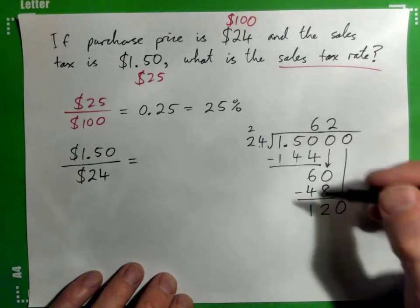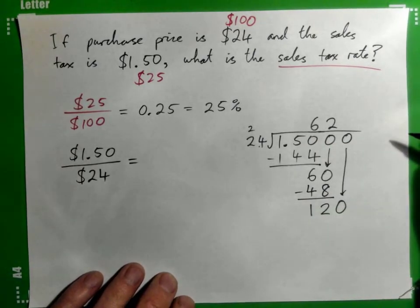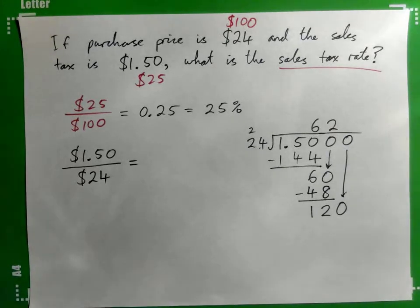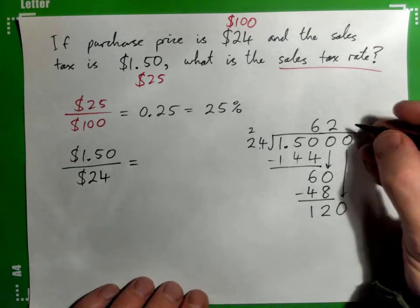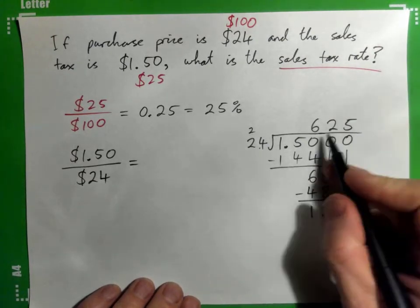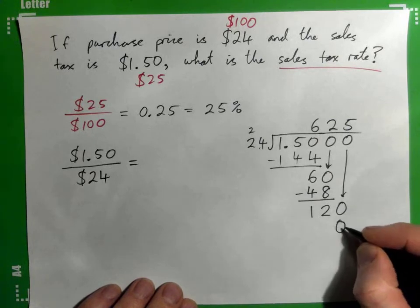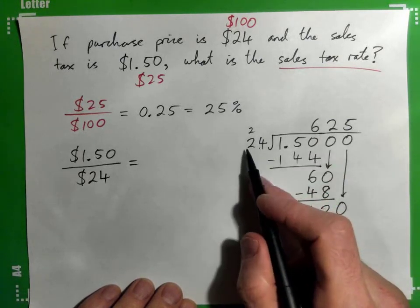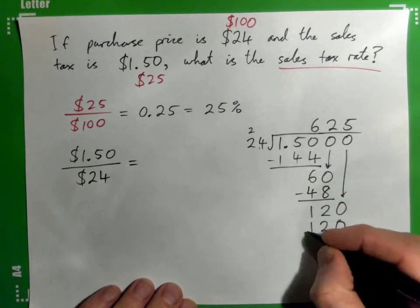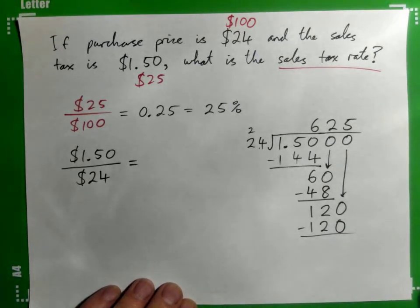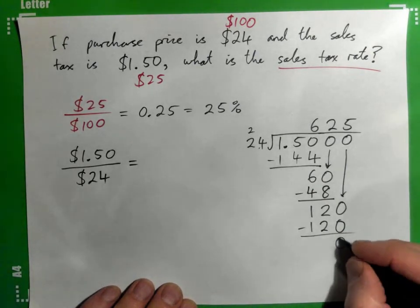So 24 into 120. Yeah, 5. Good guess. 5 times 4, 20, carry 2. 5 times 2 is 10, and 2 is 12. Subtract, and we get remainder 0, right?